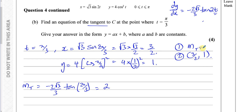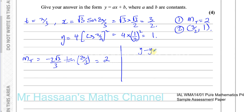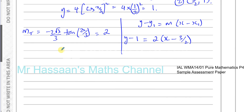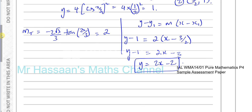Now we use y minus y1 equals m times (x minus x1). So y minus 1 equals 2 times (x minus 3/2). Expanding the right side gives 2x minus 3. Adding 1 to both sides: y equals 2x minus 3 plus 1, which is y equals 2x minus 2. And there we have the equation of the tangent — that's the answer to part B.